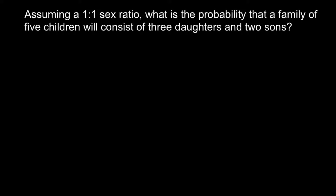So here is a problem: assuming a one-to-one sex ratio, what is the probability that a family of five children will consist of three daughters and two sons? If you know how to use the factorial method, I recommend you stop the video here, try to solve this problem on your own, and when you are ready you can run the video again and compare your answer with my answer and explanation.